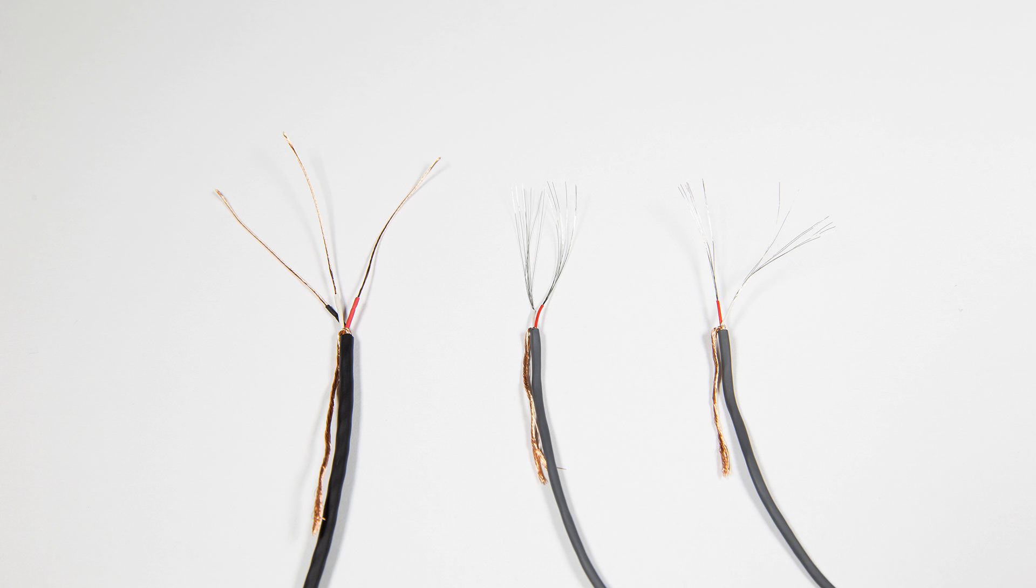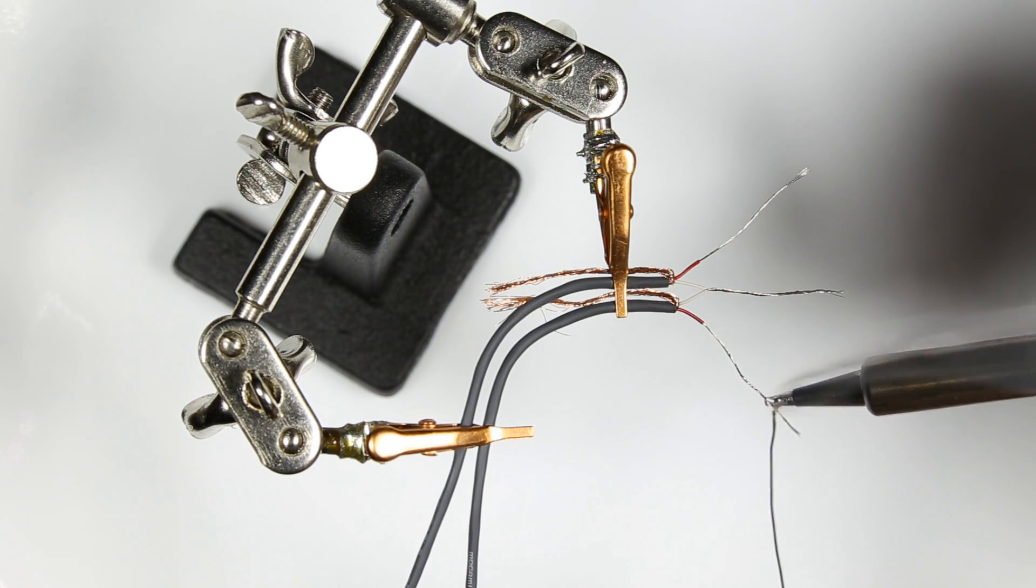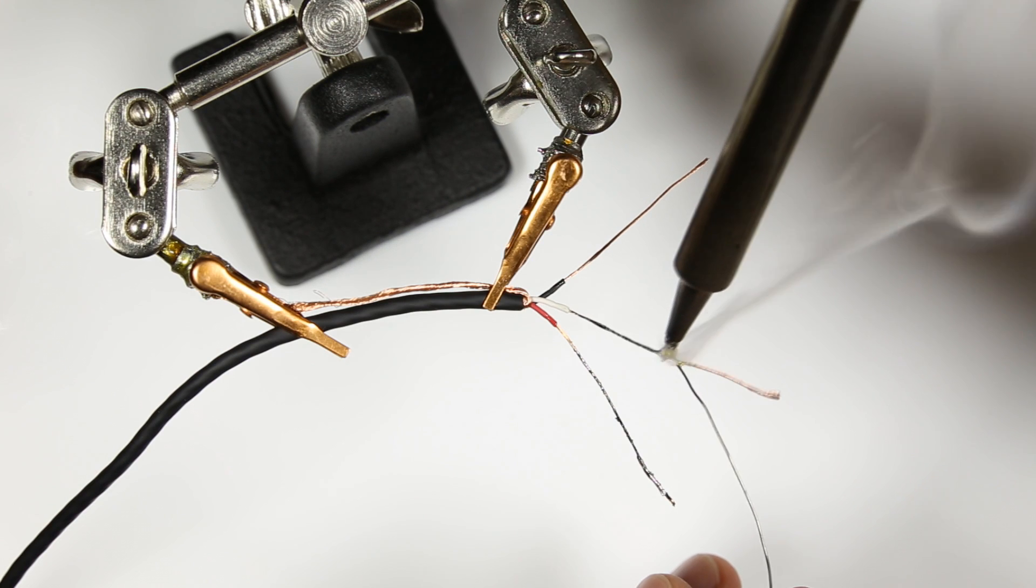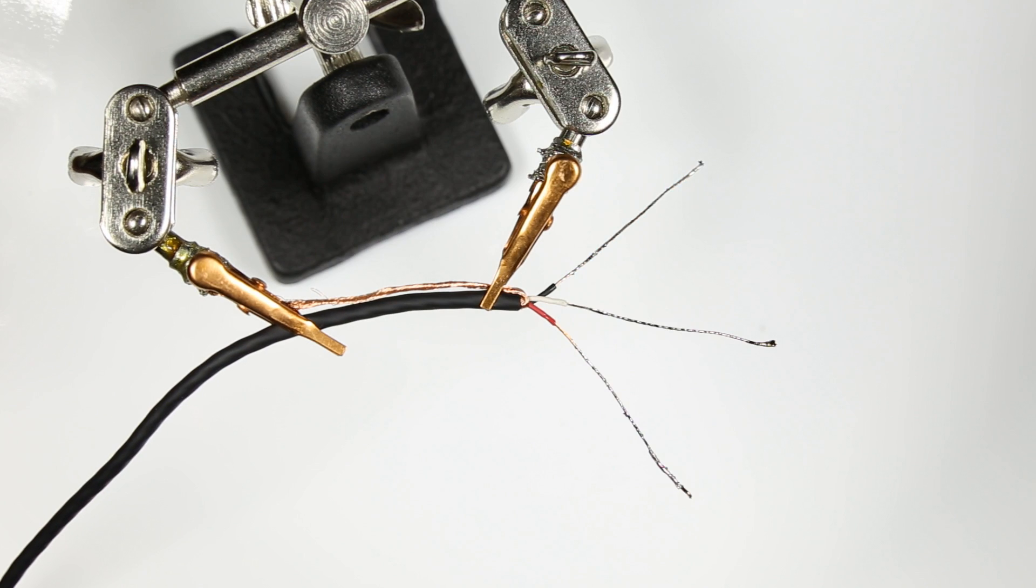You strip the jackets off the wires, then you tin the earbud wires with solder and you tin the main cable too. Now we're ready to join them together, but headphones get yanked on, so the joint has to be strong or they'll just tear apart the moment you put any stress on them.